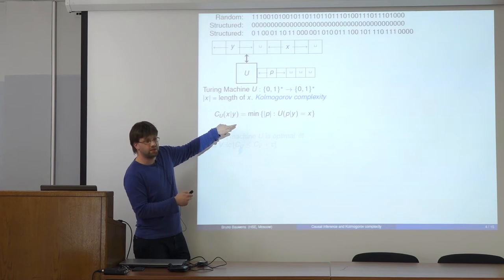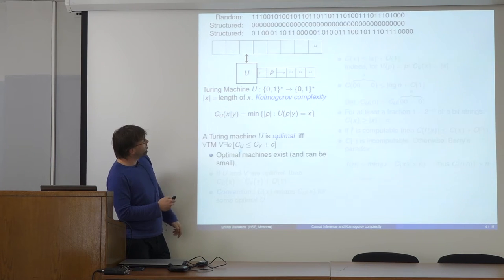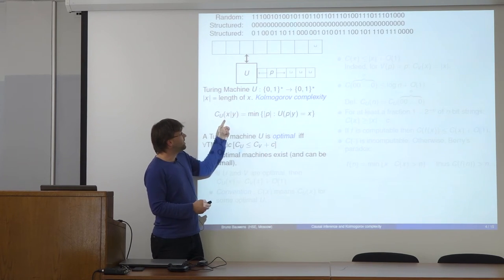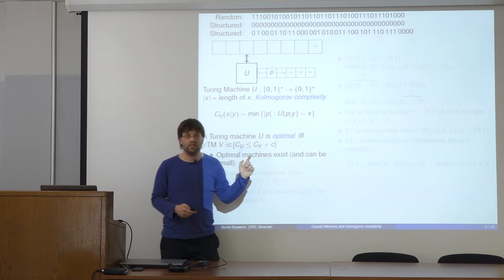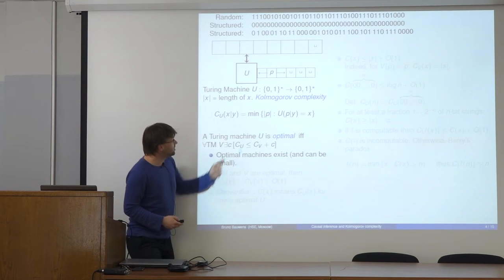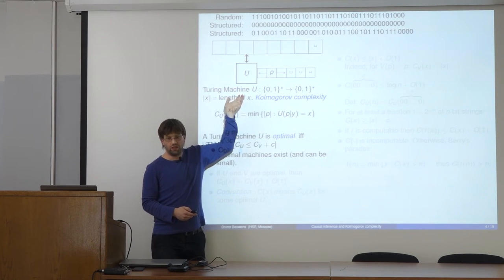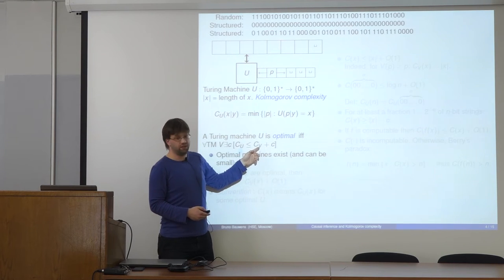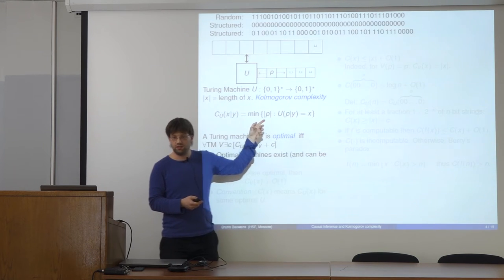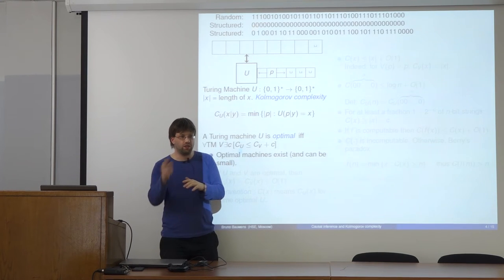We say a Turing machine is optimal if for any other machine, the complexity measure is smaller only up to a constant. The machine V is a Turing machine — an example of a computer. For any other machine, we have a different complexity function. But there exist special optimal machines that are maybe worse than another machine, but only worse by a constant. These are machines that can simulate other machines, much like a compiler for another computer.